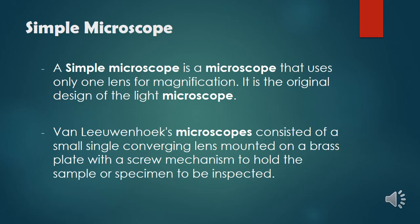Van Leeuwenhoek's microscopes consisted of a small single converging lens mounted on a brass plate with a screw mechanism to hold a sample or specimen to be inspected.